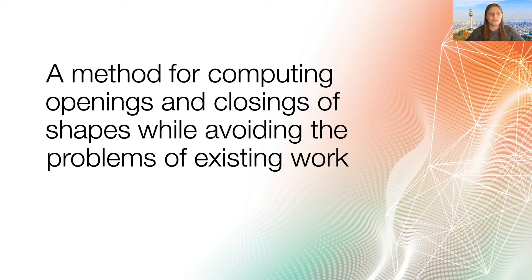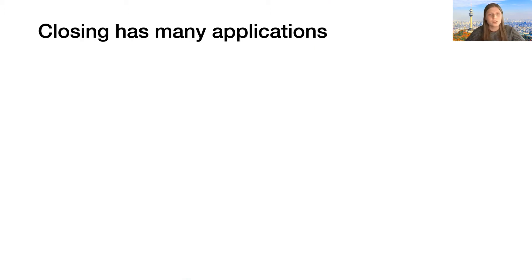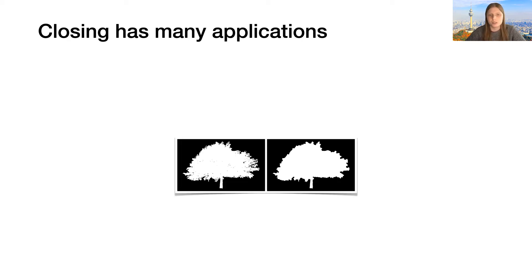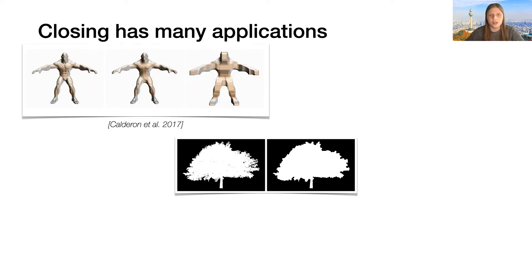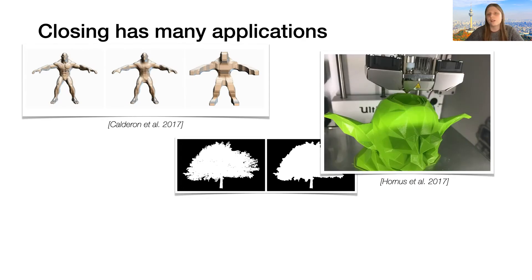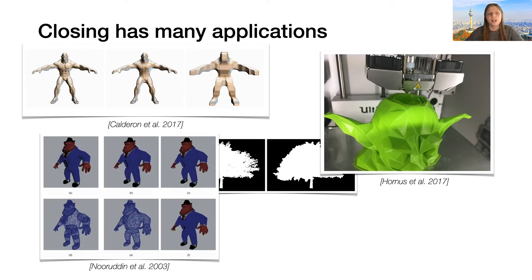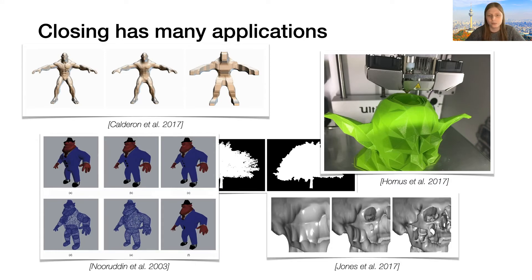Okay, now that we've defined what the opening and closing are, let's take a look at what the existing work looks like in this field. These operations have many uses in the computer graphics literature, from topological denoising, to cage design, to fabrication planning, to shape simplification, and it is even pitched as a way of reconstructing a face from a skull in this paper.